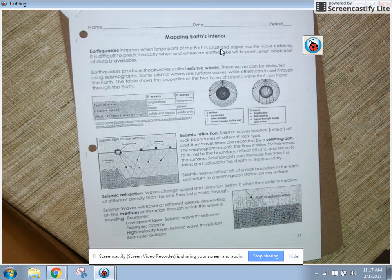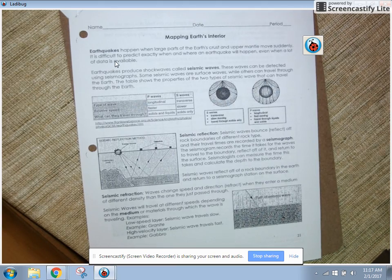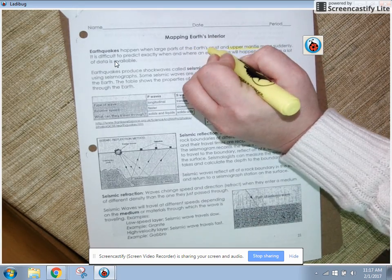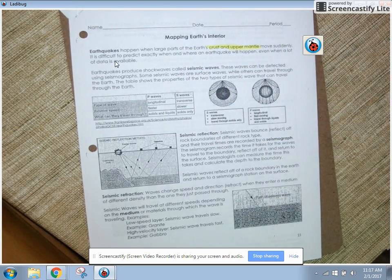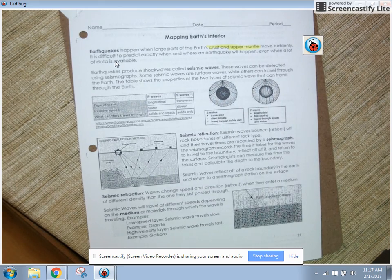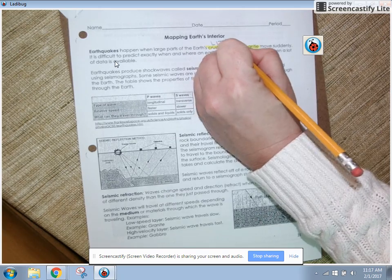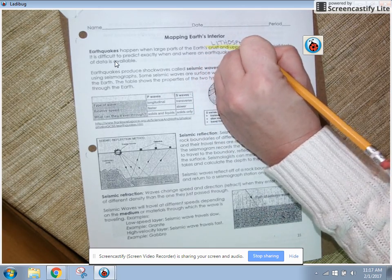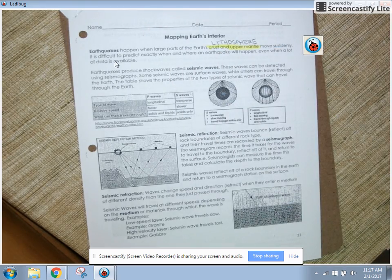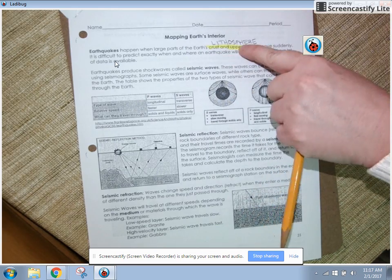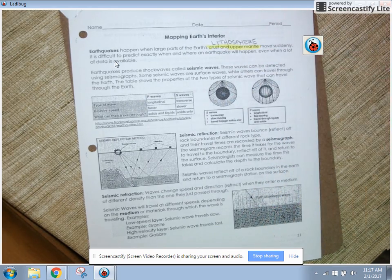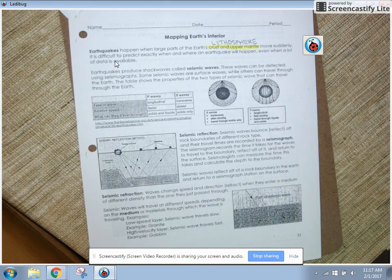It says earthquakes happen when large parts of Earth's crust and upper mantle move suddenly. It is difficult to predict exactly when and where an earthquake will happen even when a lot of data is available. Now I'd like you to notice and I'd like you to highlight - the crust and the upper mantle, they have given us one of our vocabulary words without using our vocabulary words and at this point you should know that Earth's crust and upper mantle combine to make the lithosphere. Highlight that and write that on there. In other words, earthquakes happen when large parts of Earth's lithosphere move. Remember this lithosphere, this surface layer of the earth that includes the crust and the upper mantle is broken into some very large pieces and also some small pieces.